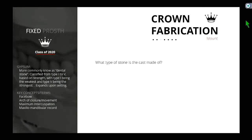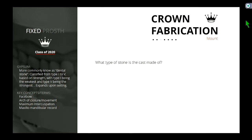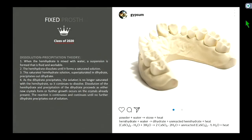What types of stone is the cast made of? Thankfully I taught you guys dental materials, so hopefully there's some recollection. What types of stone do we pour this impression into? We pour it into gypsum. We know powder plus liquid, or powder plus water, is going to give us stone plus heat.